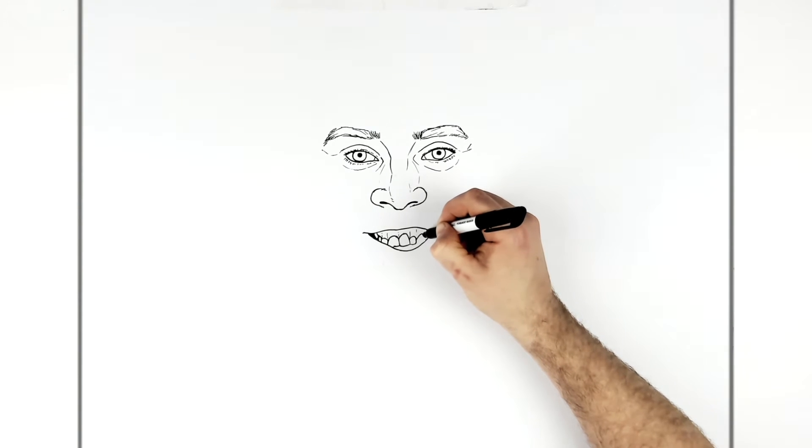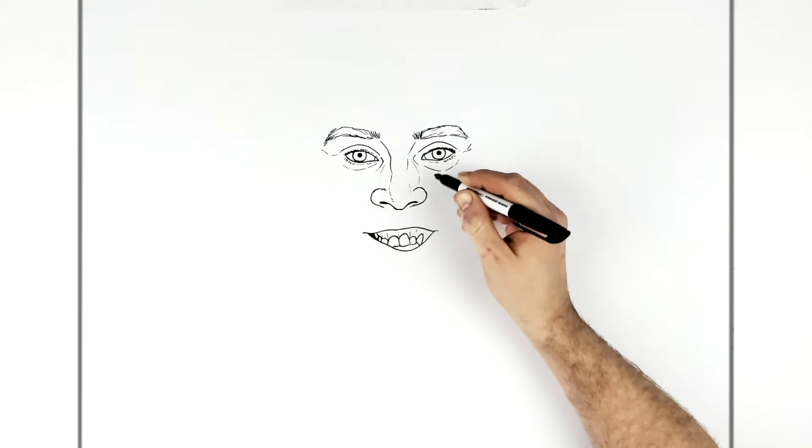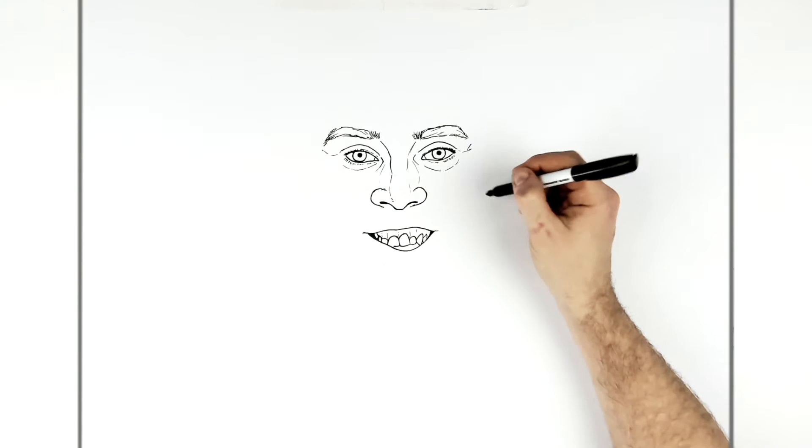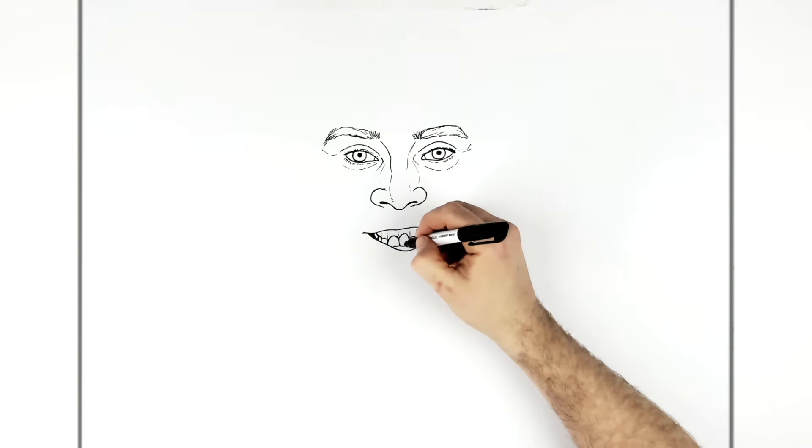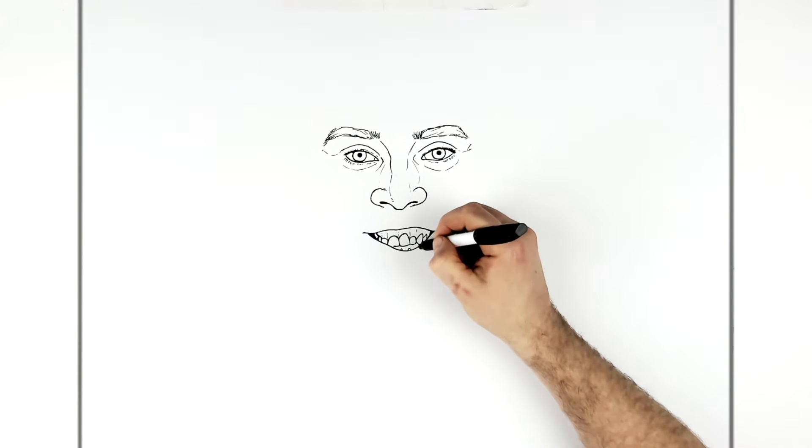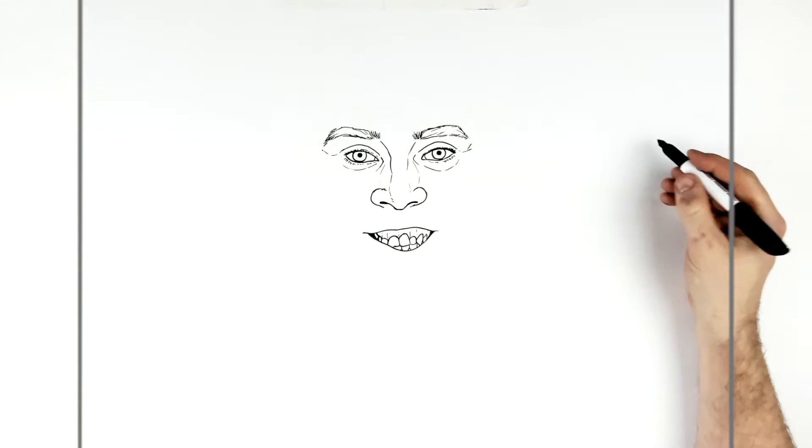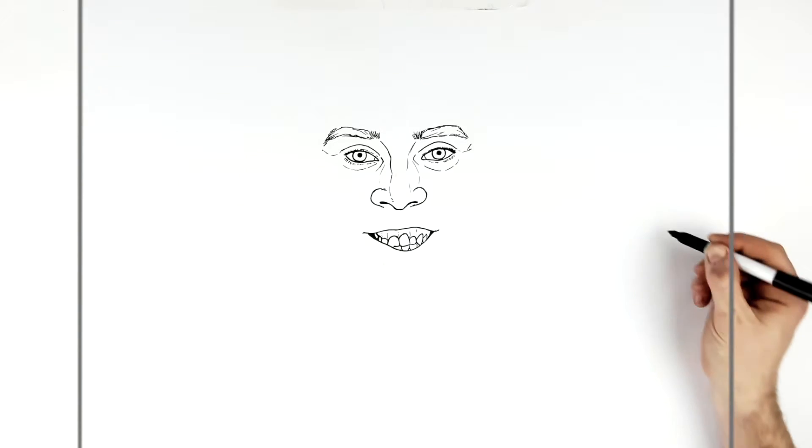And then like a sharp one over here. And then like another bit of a shadow just at this side of his mouth. And then we can just see some teeth just here on the bottom.